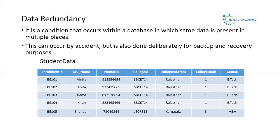Data redundancy also increases the size and complexity of the database. For example, if I store multiple copies of the same data for backup and forget I already have a student data table on one drive and create the same table on another drive, the size and complexity increase, making the database very hard to maintain. A large database also leads to longer load times and slower query results.